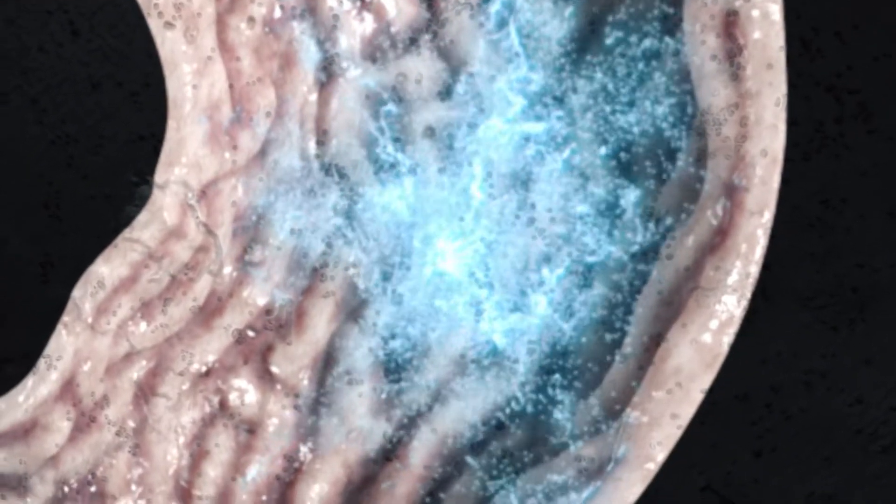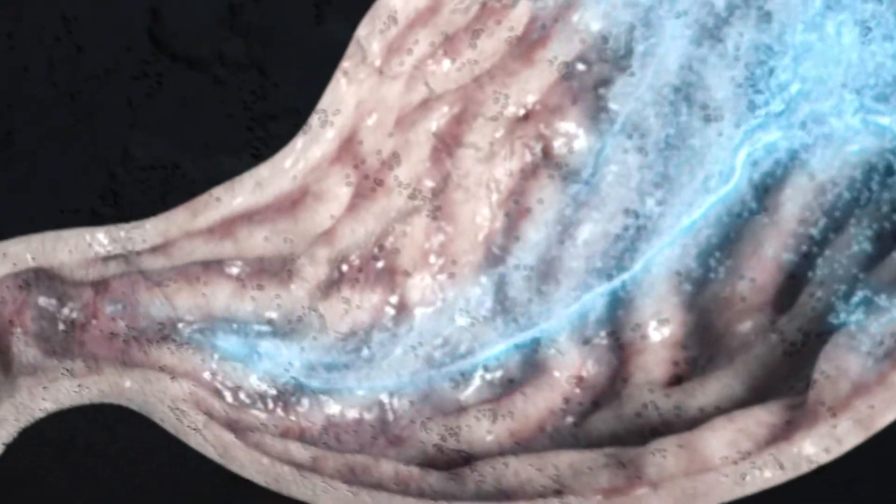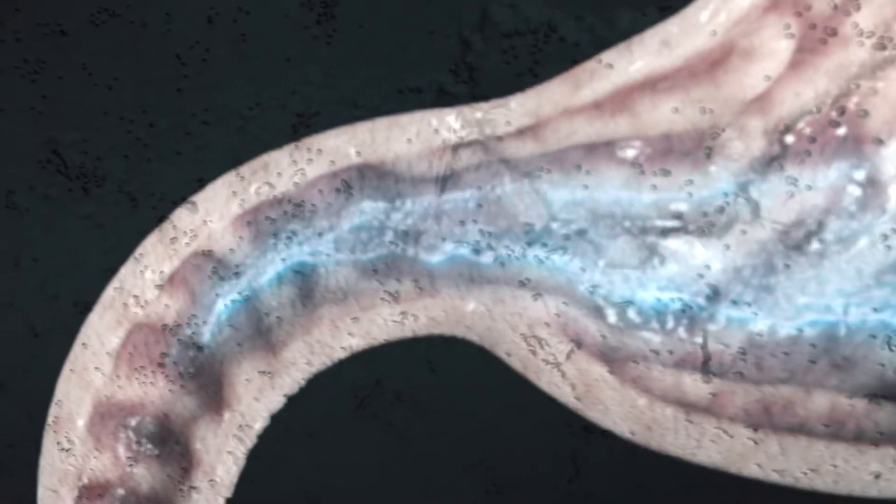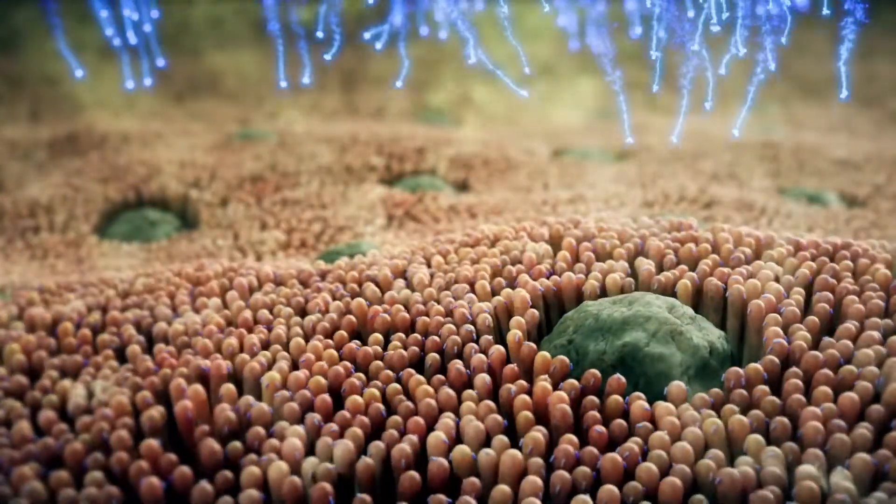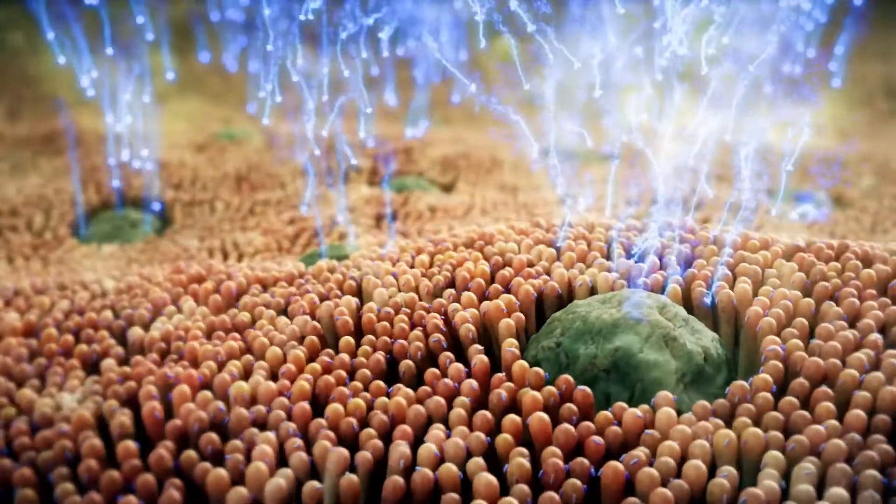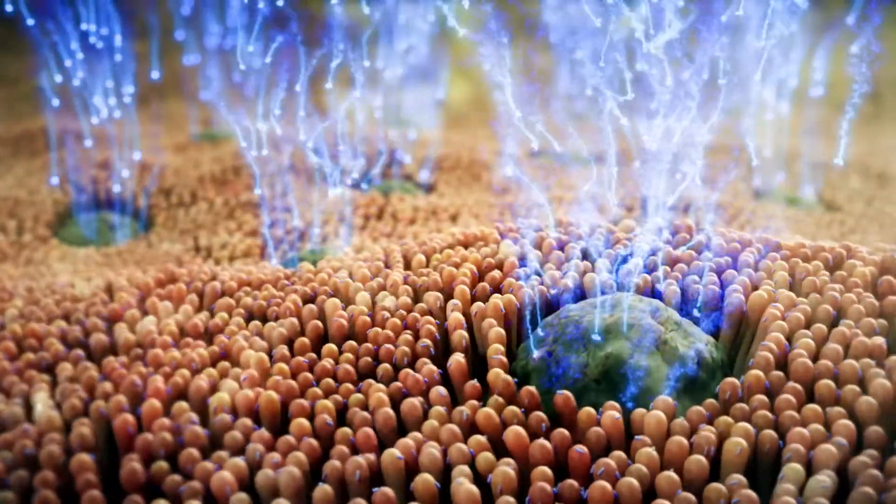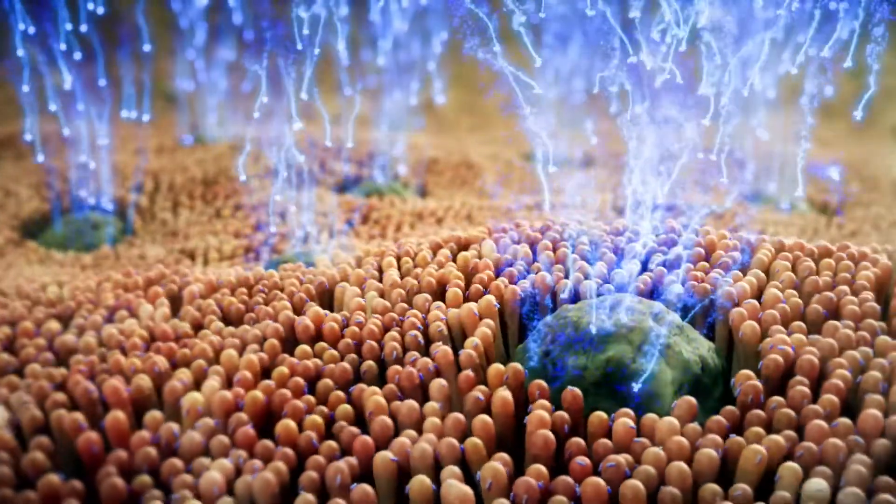The transfer factor molecules enter the intestines, where they encounter groups of immune cells called Peyer's patches. Peyer's patches are concentrated centers of immune cells, and this is where For Life Transfer Factor begins educating your immune system.